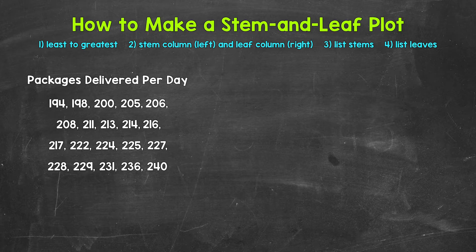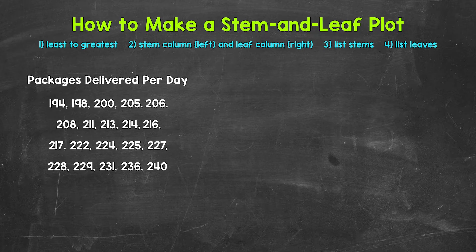Let's jump into our example where we have the number of packages delivered per day by a delivery person over the past 20 days that they have worked. The first thing we need to do is order the data from least to greatest if it's not already in order. For this example, the data is already in order from least to greatest, which makes it much simpler to go through the data and create a stem and leaf plot.